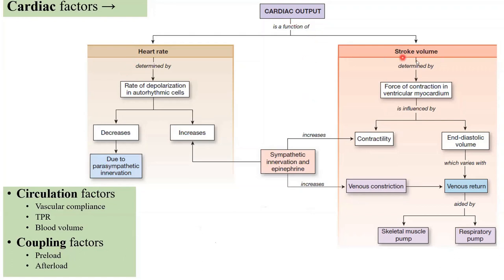The two main characters are stroke volume and heart rate. Stroke volume is the amount of blood that a ventricle ejects per beat — note the common mistake: cardiac output is per unit time, whereas stroke volume is per beat. Stroke volume is determined by how hard the ventricle can contract, and this is where Frank-Starling law becomes operational. It is influenced by two things: end diastolic volume (EDV) and contractility.